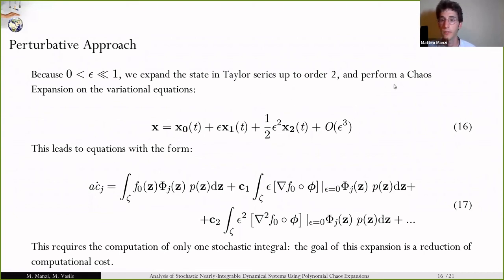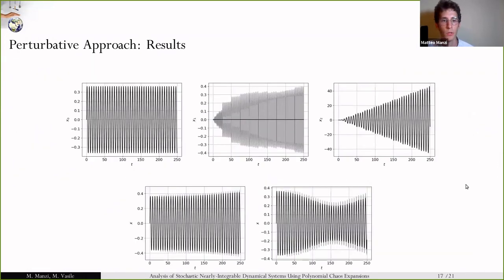Without getting into the details, this leads to an equation that reduces computational costs, because we need to compute the stochastic integral only once. We do this with the stochastic Hénon-Heiles system, and you can see for the first component X, we have X0, X1 and X2, which build up to X, while the right one is the one associated to the full dynamics. You can see here there is a mismatch.